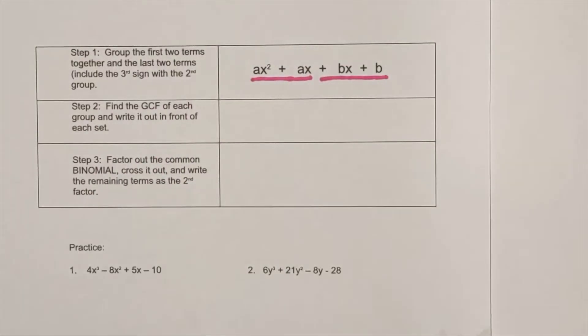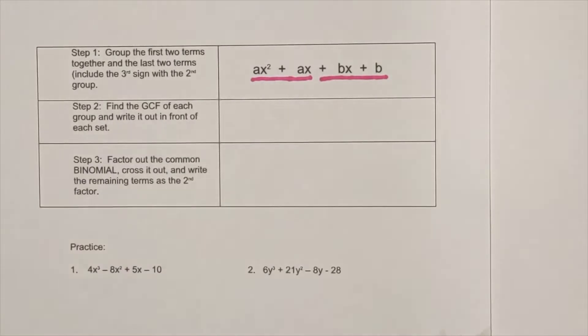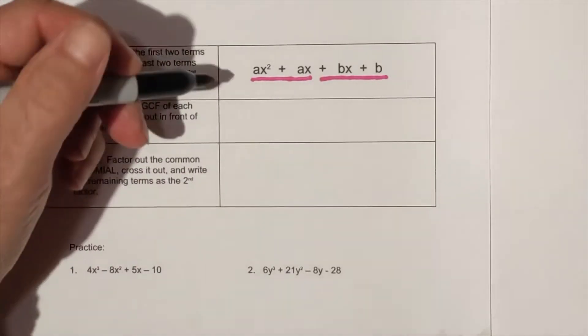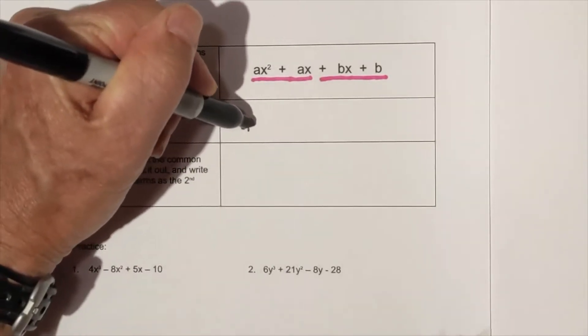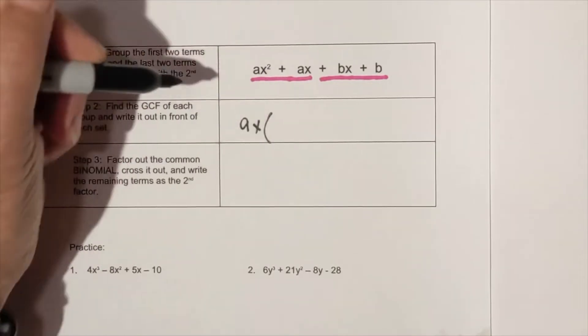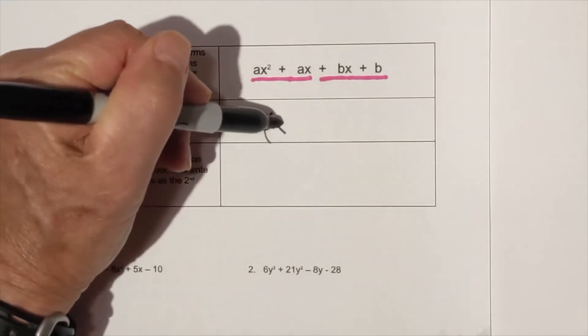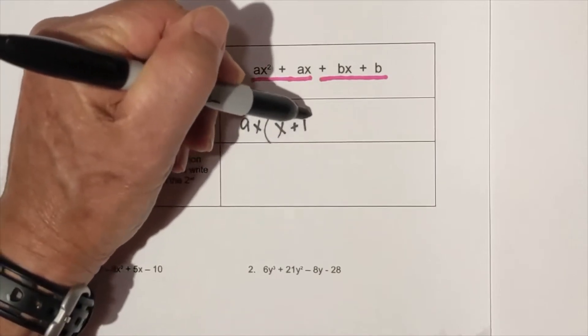Next we need to find a greatest common factor for each of these groupings. For the first one it will be ax. So when I take ax out, I am left with x plus one because whenever you factor out ax from ax squared, you're left with one.